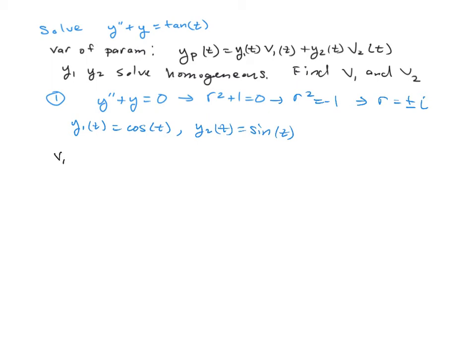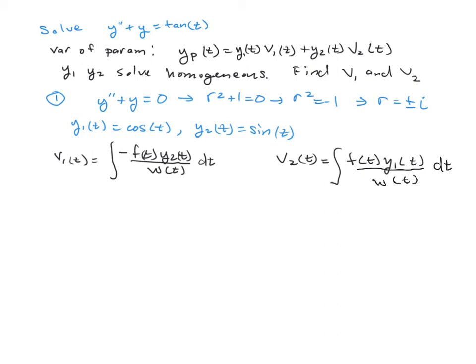v1(t) is the integral of the negative forcing term: -f(t)y2(t) divided by the Wronskian. v2(t) is similar: the integral of f(t)y1(t) divided by the Wronskian.